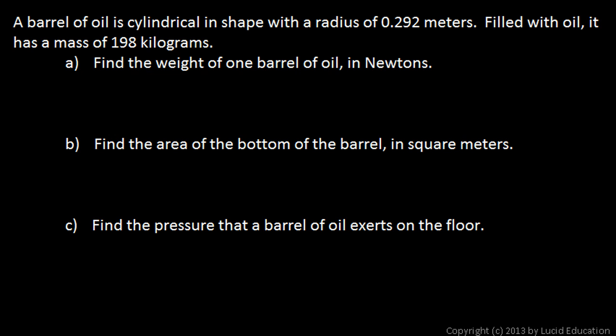In this problem, we're told that a barrel of oil is cylindrical in shape with a radius of 0.292 meters. Filled with oil, it has a mass of 198 kilograms. These are actual numbers for a standard cylindrical metal barrel—think of a large metal drum. Part (a): Find the weight of one barrel of oil in newtons.